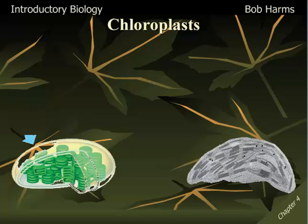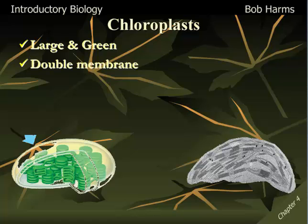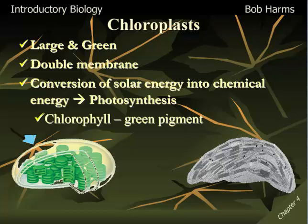Another organelle, this one we only see in plants, are the chloroplasts — a plant-only organelle. They're very large and green, also have a double membrane, and are associated with energy. It's the chloroplasts that are responsible for photosynthesis — taking solar energy and converting it into chemical energy for plants to store up and utilize. They contain a green pigment called chlorophyll; it's that green pigment that makes the chloroplast green. Each leaf cell contains hundreds of chloroplasts, and it's those little green microscopic dots that give plants their green color. It's also this chlorophyll that's responsible for absorbing energy from the sun and passing it on to the metabolic pathway for making sugars.